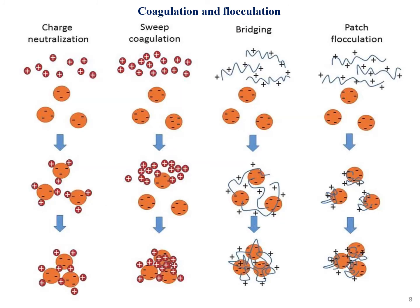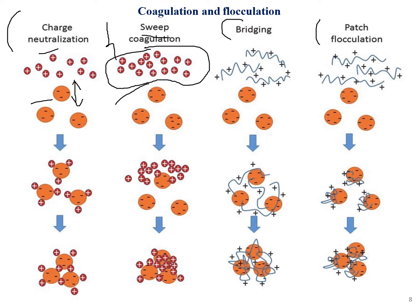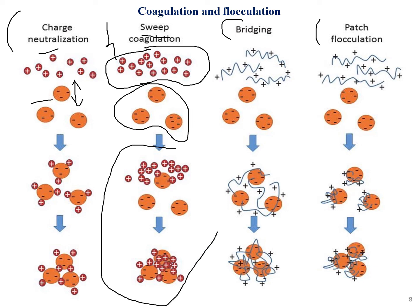The mechanisms of coagulation and flocculation include: charge neutralization — where positive and negative charges interact in solution and attract each other to form small flocks leading to coagulation; and sweep coagulation — where a large amount of positively charged electrolytes are added and interact with substances present in the medium to form flocks.